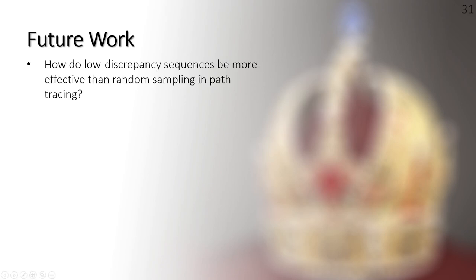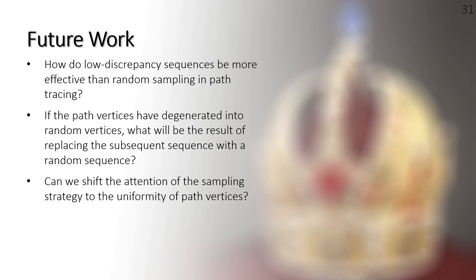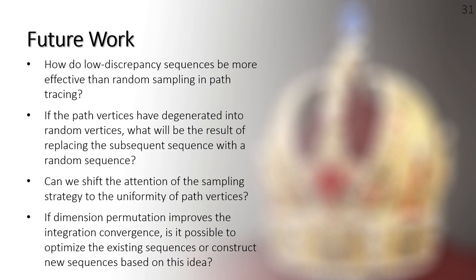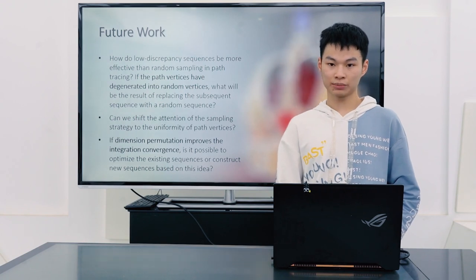In the end, let's share some future work on the rippling effect. How do low-discrepancy sequences be more effective than random sampling in path tracing? If path vertices have degenerated into random vertices, what will be the result of replacing the subsequent sequence with a random sequence? Can we shift the attention of sampling strategy to the uniformity of the path vertices? If dimension permutation improves the integration convergence, is it possible to optimize the existing sequence or construct new sequences based on this idea? We will continuously work in this field with those questions and explore more.